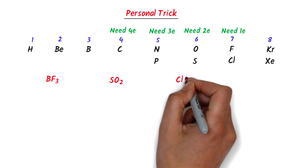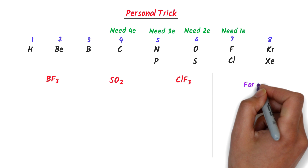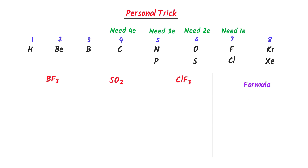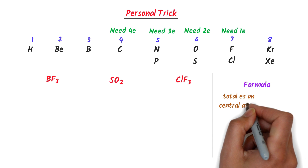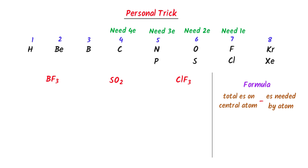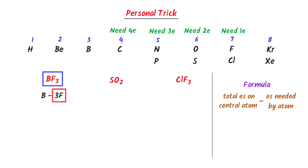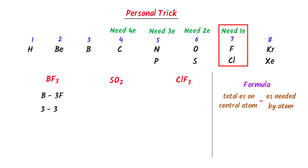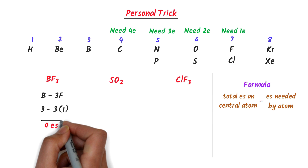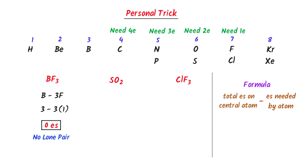For example, consider these molecules. I use my personal formula to find the lone pair of electrons: total electrons on central atom minus electrons needed by the atom. Here, the central atom is boron, so I write B minus 3F. This 3 means there are 3 atoms of fluorine present in this molecule. We know that in the valence shell of boron there are 3 electrons, minus 3, and fluorine needs 1 electron to complete its octet rule. So I get 3 minus 3 equals 0.